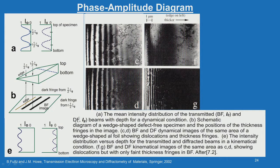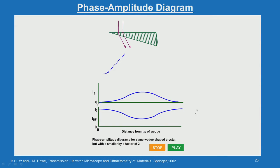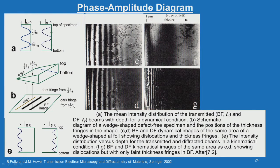The image produced in dynamical conditions shows fringes that are far apart, which corresponds to the phase amplitude diagram with smaller S. You can see that the fringes are widely spaced and the dislocation details are also visible. This is the bright field image and the dark field image, which are complementary to each other for small S. For the same crystal under kinematical condition, the fringe pattern is very close together and the dislocation details are not as clearly seen as in the dynamical condition.